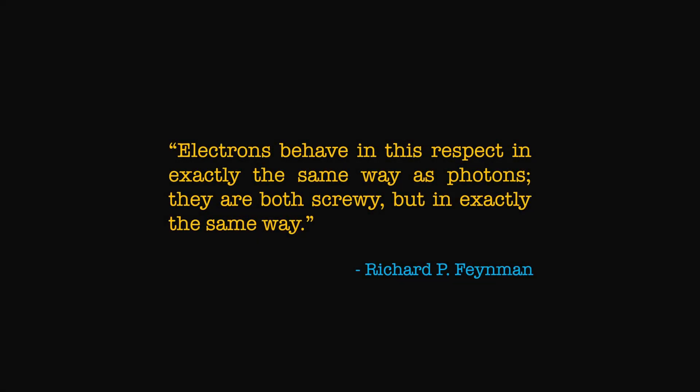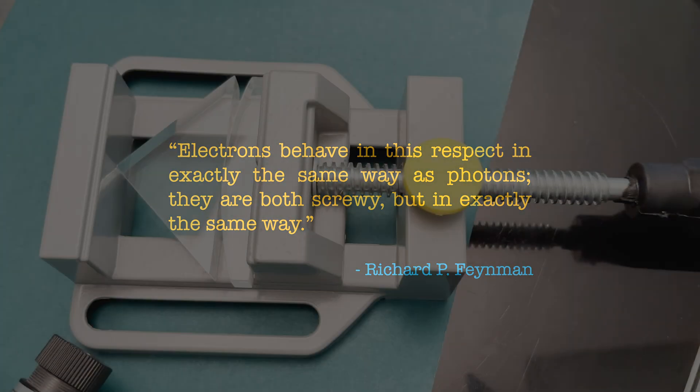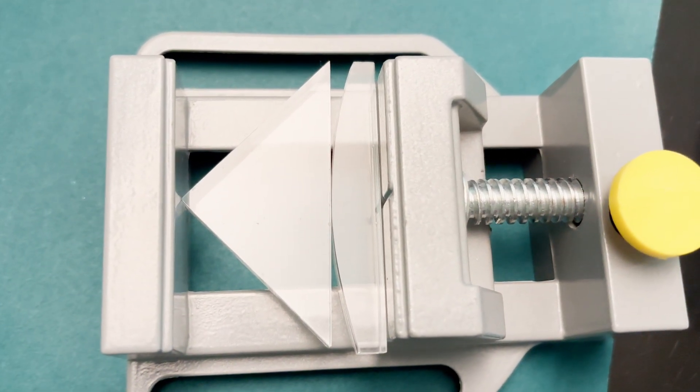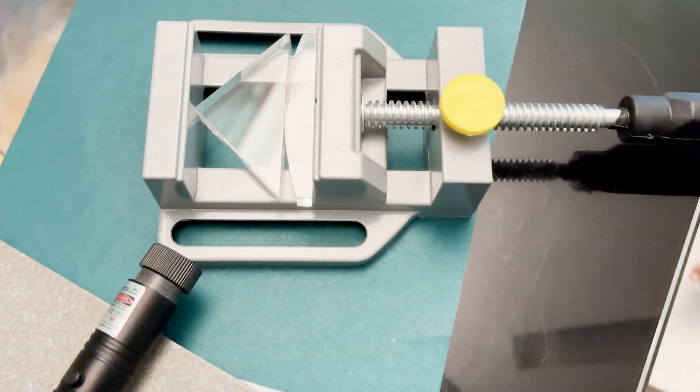Let's begin by doing a simple experiment that demonstrates tunneling of light waves. We will use two acrylic blocks, a prism and a plano-convex lens, a laser pointer, and a small vise.